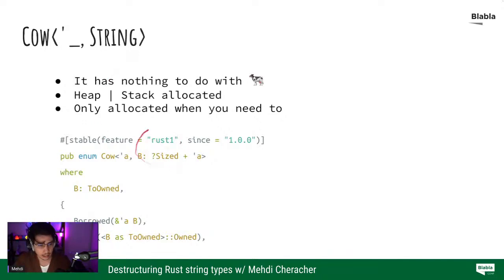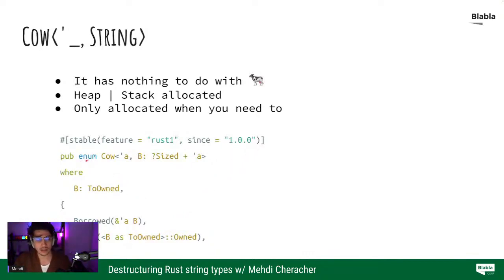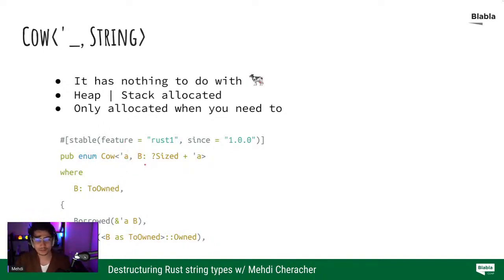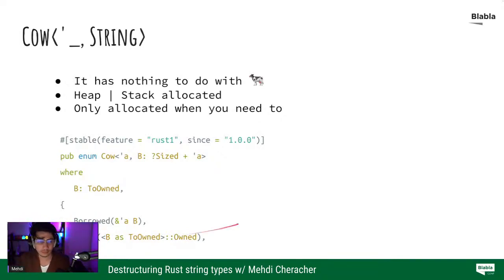Looking at Cow's type definition — it's just a plain enum in the standard library. An enum in Rust is like C enums but on steroids. Cow is a generic type over a lifetime. It has two variants: a Borrowed variant that takes only a reference, and an Owned variant that takes an owned value — something that is owned or can be transformed into an owned value.